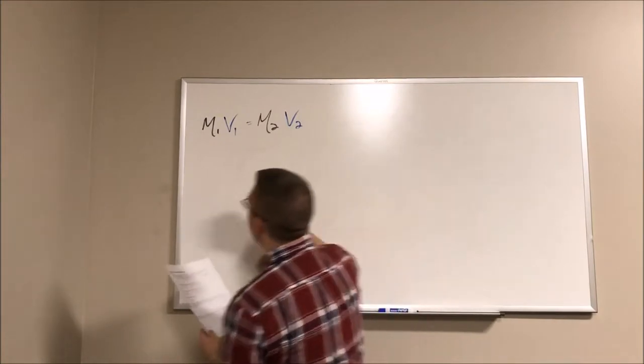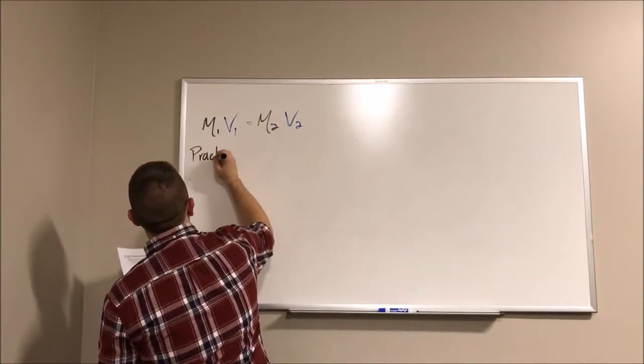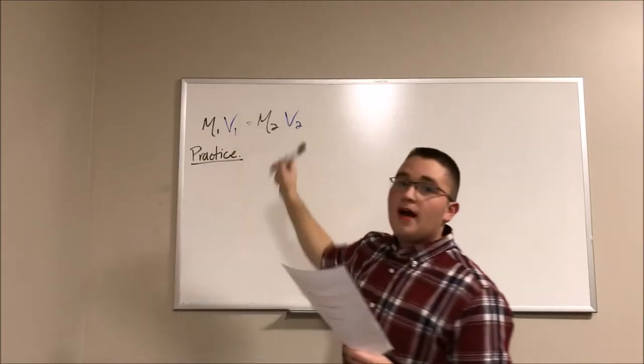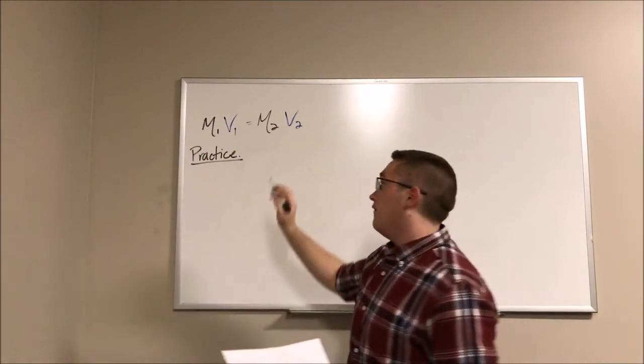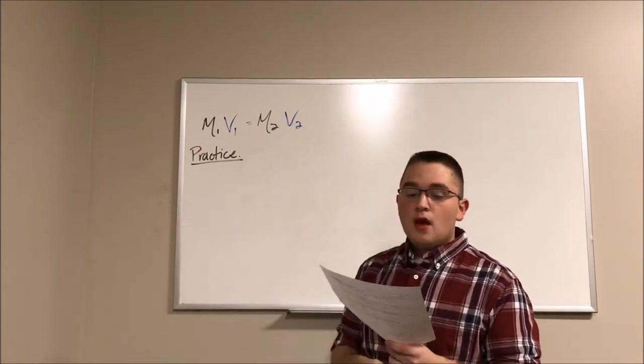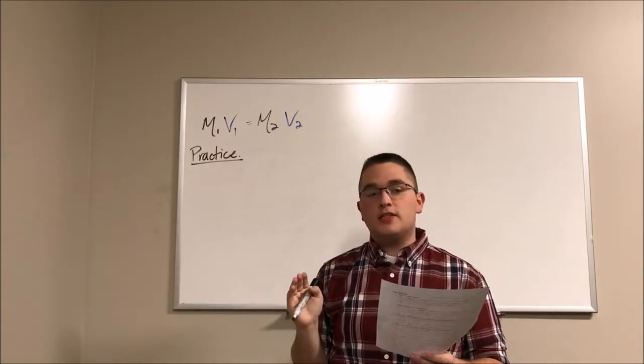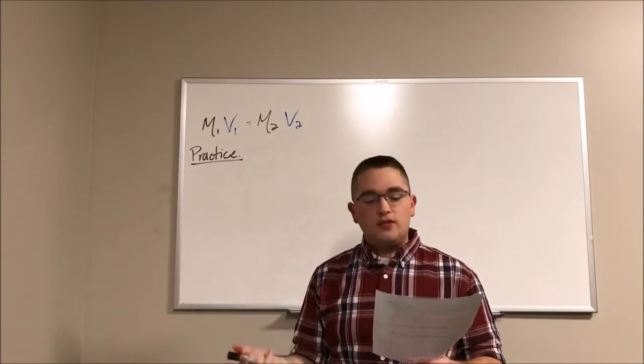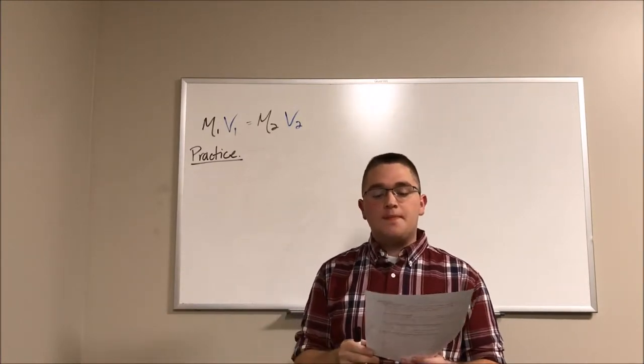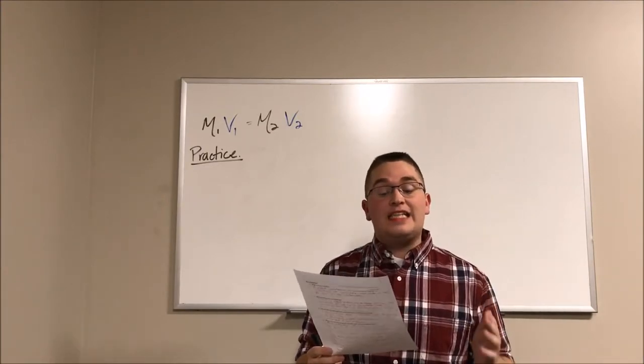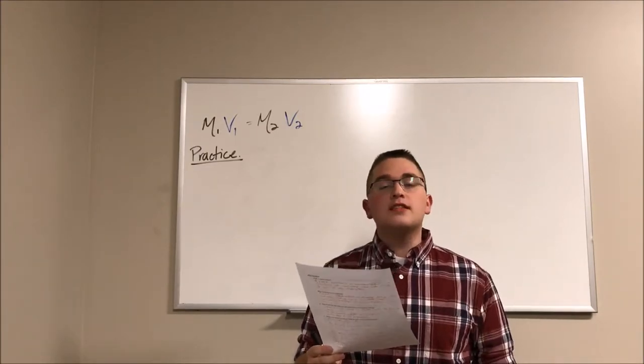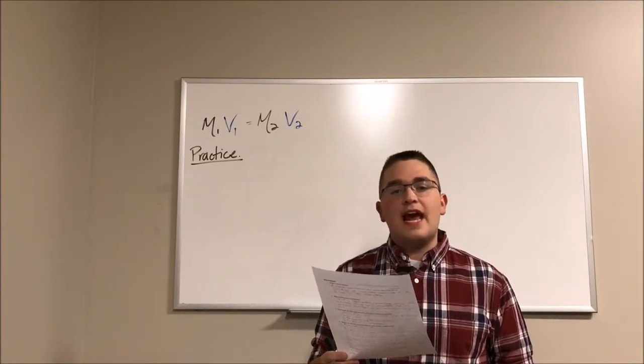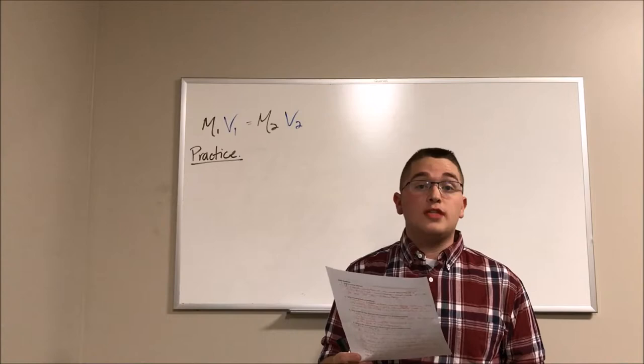So number two, practice. Keeping this equation in mind and knowing that we're always going to be solving for exactly one variable. Brent needs to make 92 liters of 1X, so concentration of 1, TBE solution. If he only has 10X TBE available, he will need to dilute with distilled water. Calculate how much of the 10X TBE and distilled water he will need.